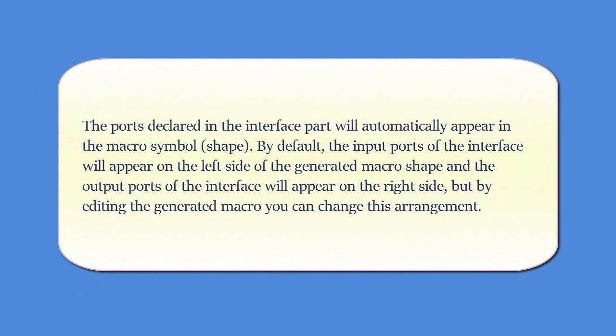The ports declared in the interface part will automatically appear in the macro symbol shape. By default, the input ports of the interface will appear on the left side of the generated macro shape and the output ports of the interface will appear on the right side. But by editing the generated macro, you can change this arrangement.